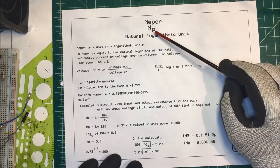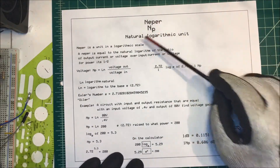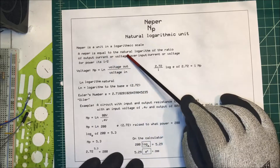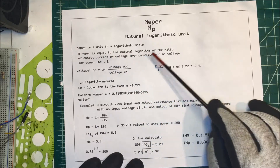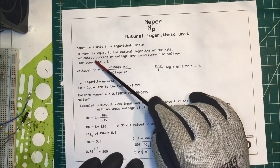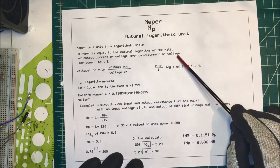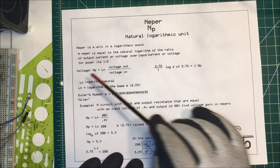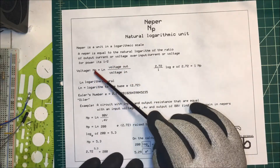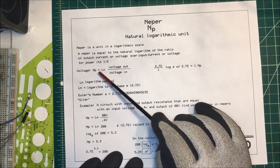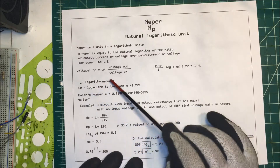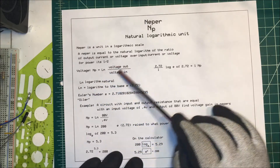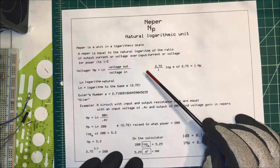Let's talk about a Neper. NP is a natural logarithmic unit. A Neper is equal to the natural logarithm of the ratio of the output current or voltage over the input current or voltage. For power it's half of that. So for voltage, a Neper is equal to ln — which is our natural logarithm — times the voltage out over the voltage in.